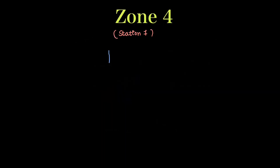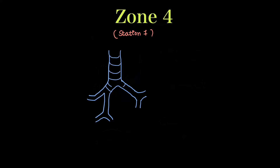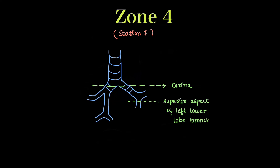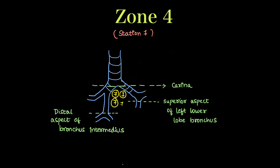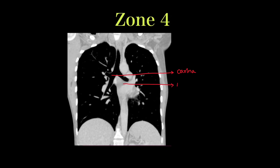Zone 4 is the subcarinal zone, containing just one station — station 7. The upper limit is the carina, while the lower limit differs by side: on the left it is the superior aspect of the left lower lobe bronchus, and on the right it is the distal aspect of the bronchus intermedius. All nodes between these limits are station 7. This is seen on coronal CT, identifying the carina, left lower lobe bronchus, and distal bronchus intermedius.